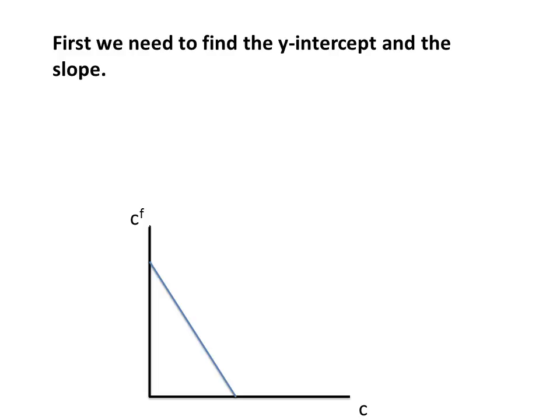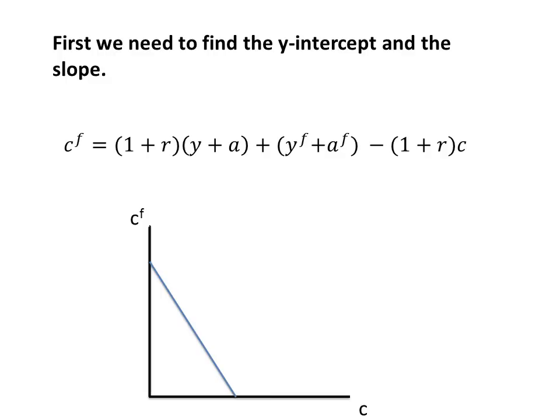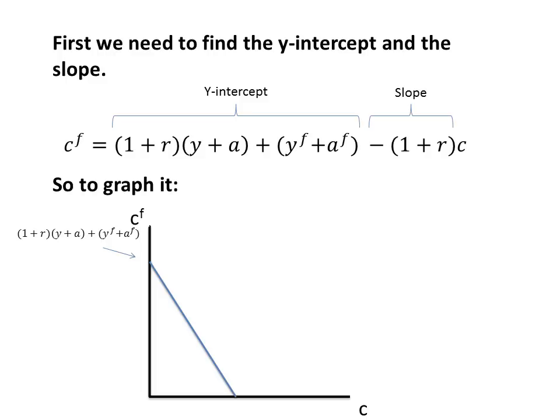First we identify the Y-intercept and the slope. Just like in the basic formula Y equals MX plus B, B is the Y-intercept and M is the slope. With our equation in this form — CF equals this expression — we can see the Y-intercept is the term when C equals zero, which is the B in Y equals MX plus B. What's connected to C is our slope. So to graph it, the CF intercept is (1+R)(Y+A+YF+AF), and the slope is negative (1+R).